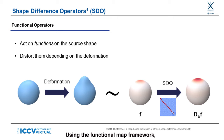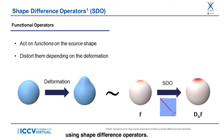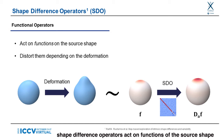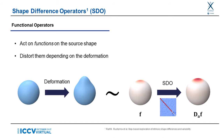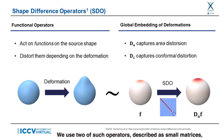Using the functional map framework, we define the deformation between two shapes using shape difference operators. Given two shapes in functional correspondences, shape difference operators act on functions of the source shape and distort them according to the deformation between the surfaces. The image below shows how the shape difference operator associated to the deformation on the left can modify the function on the right. We use two of such operators, described as small matrices, which together completely embed the intrinsic distortions between two shapes.